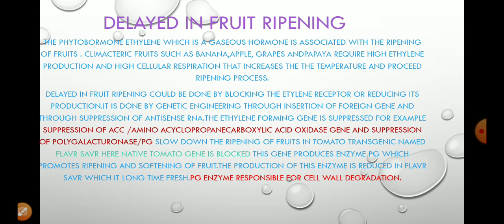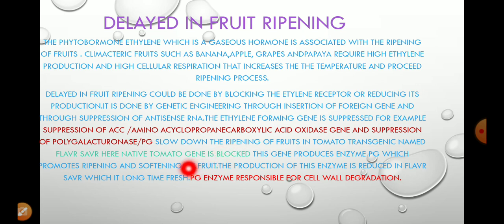We use two different genes that are responsible for suppressing the production of ethylene or its associated proteins. Some receptors are present in the plant, and when those receptors are blocked, ethylene production is ultimately slowed down or stopped. The genes used are ACC — which stands for aminoacylcyclopropane carboxylic acid oxidase — and PG, which stands for polygalacturonase.